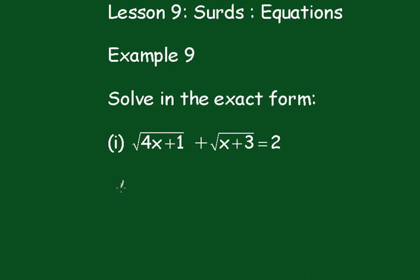Squaring, we get 4x plus 1 plus twice the product 2√((4x+1)(x+3)) plus x plus 3, and squaring the 2 we get 4.